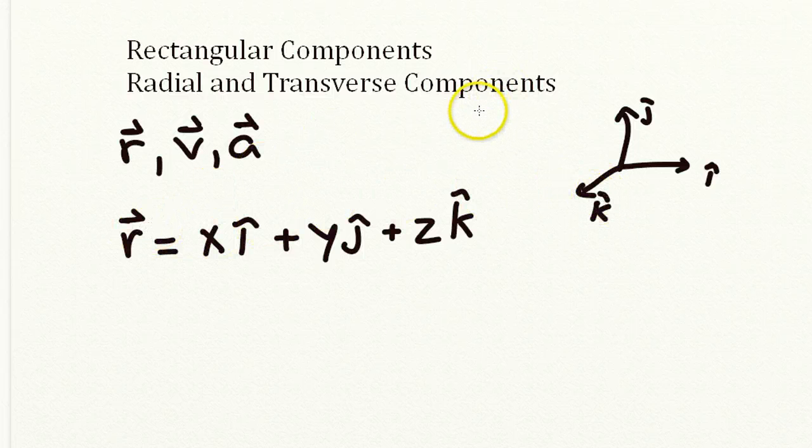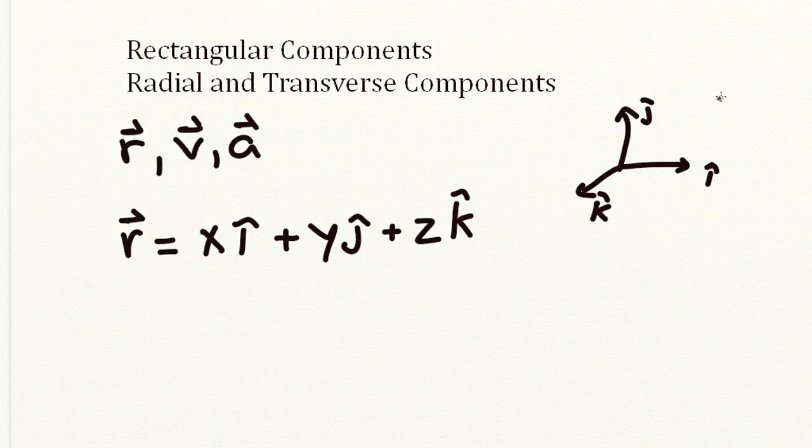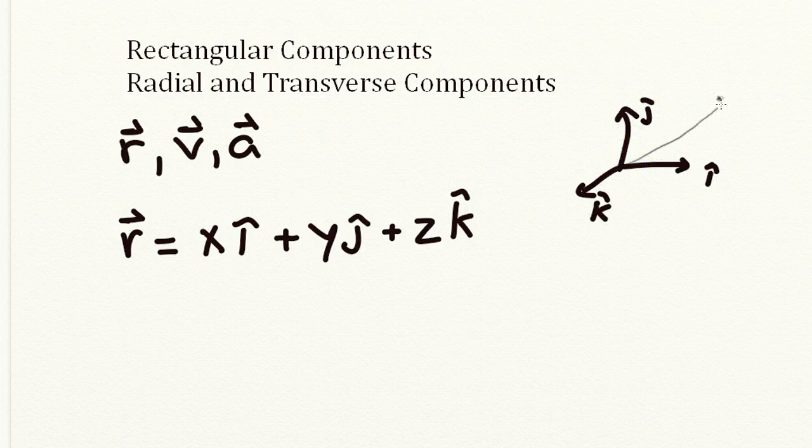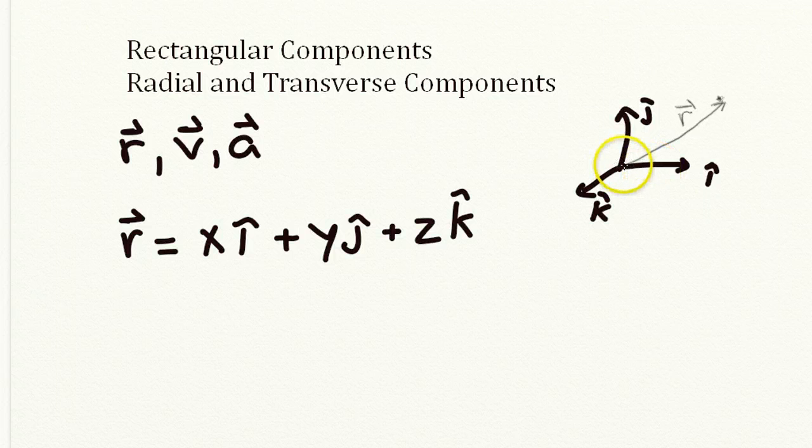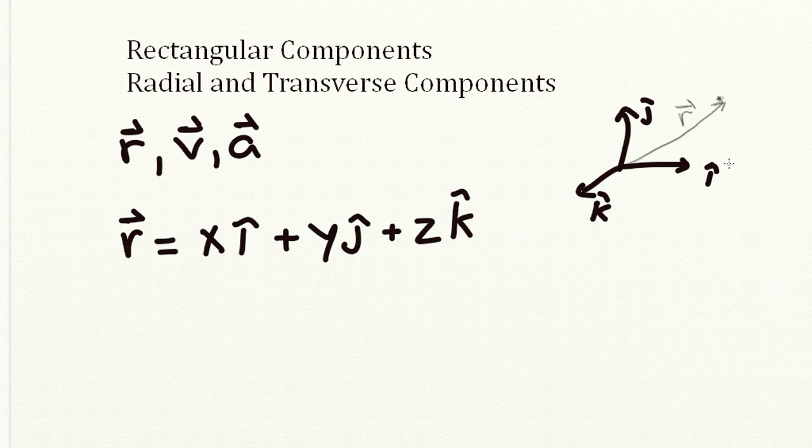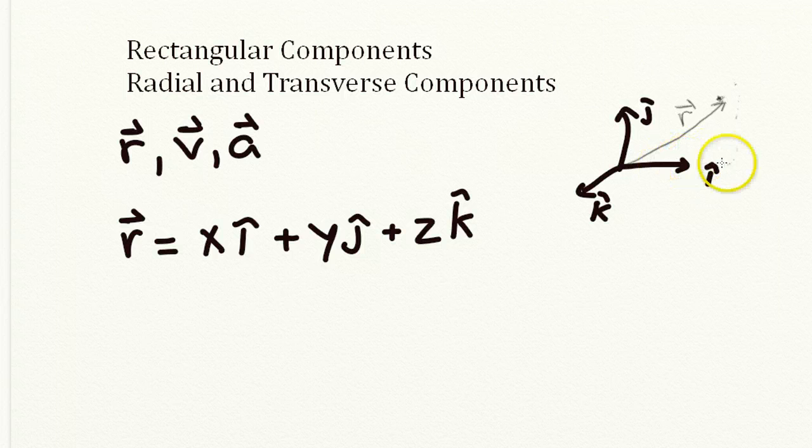So in order to describe this point r, we've got some point r here, we've got this r vector, and that r vector could equivalently be described by coming down so many units on the i-hat, going up so many units in the j-hat, and then over so many units in the k-hat direction. And that would describe that.